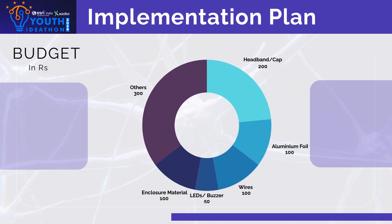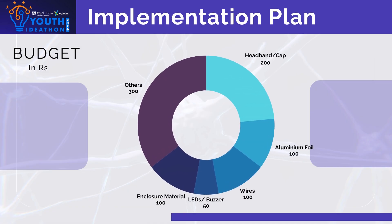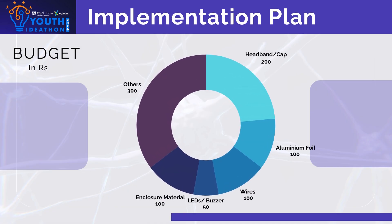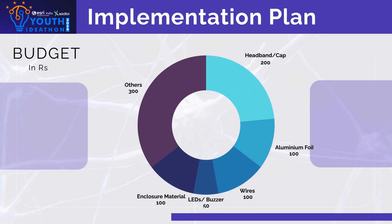Building a dream analyzer with a Rs. 1000 budget is challenging, but a prototype can be designed. Using a basic adjustable headband or cap costs around Rs. 100. Creating mock-up electrodes with aluminum foil costs about Rs. 100, and connecting them with inexpensive wires also costs about Rs. 100. For feedback, basic LEDs or buzzers will cost around Rs. 50, and the enclosure will be constructed from cardboard or 3D printed parts, about Rs. 100. The DreamPulse app can be developed using free machine learning libraries.